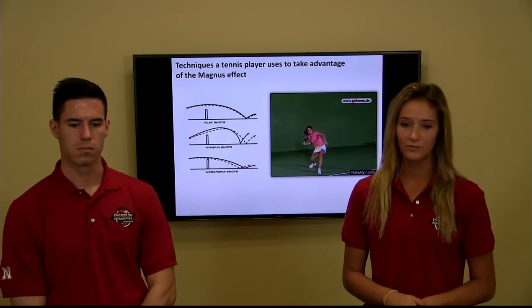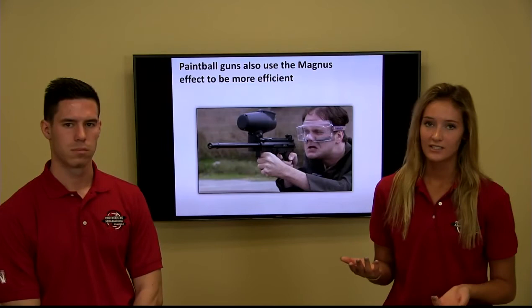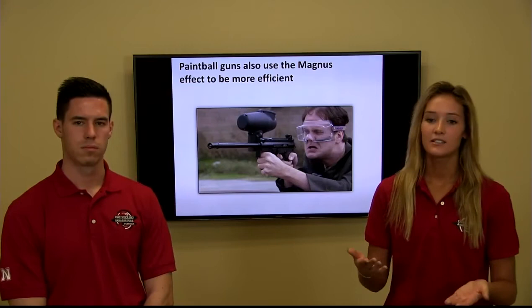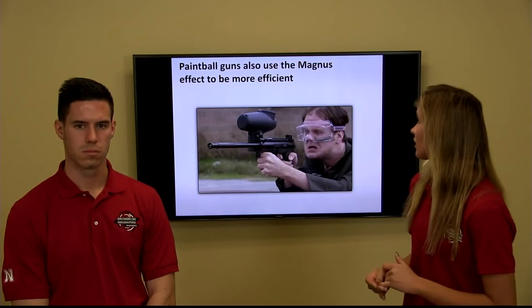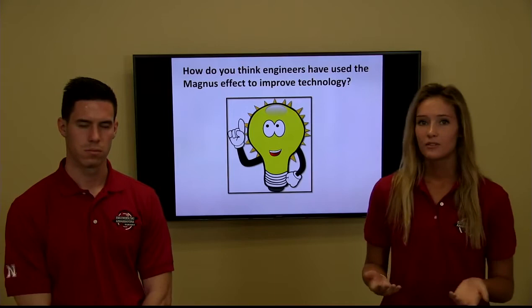Clearly a tennis player understands the Magnus effect and knows how to use it to their advantage. Staying on the topic of recreation, a paintball gun also uses the Magnus effect. The gun puts a backspin on the paintball causing it to fight gravity and stay airborne longer — similar to the backspin shot in tennis — making the gun more efficient while using the same amount of energy.